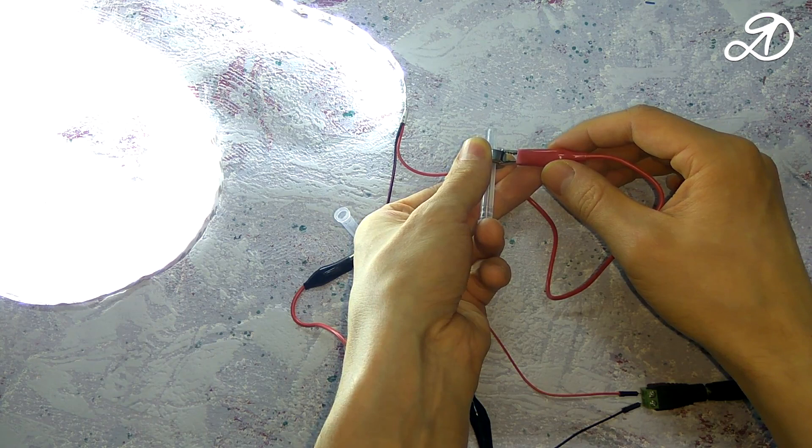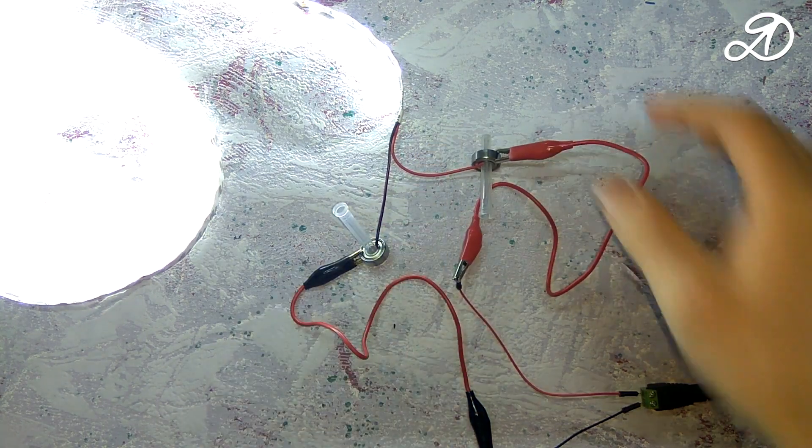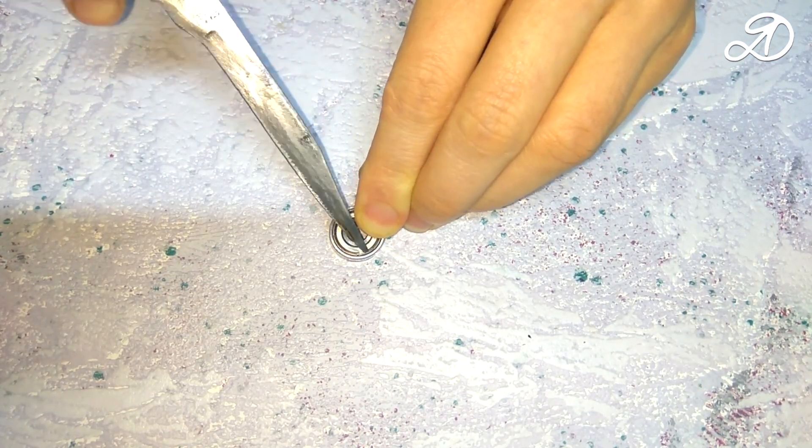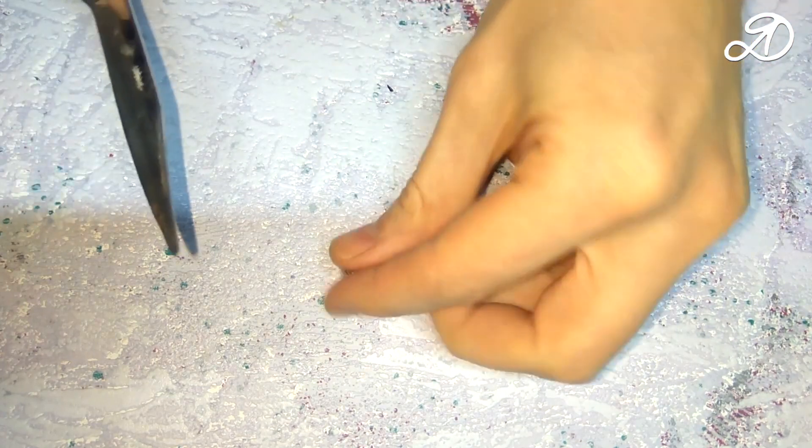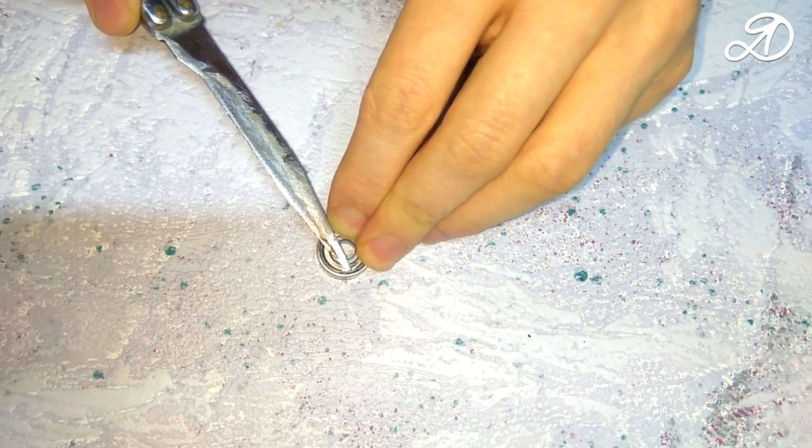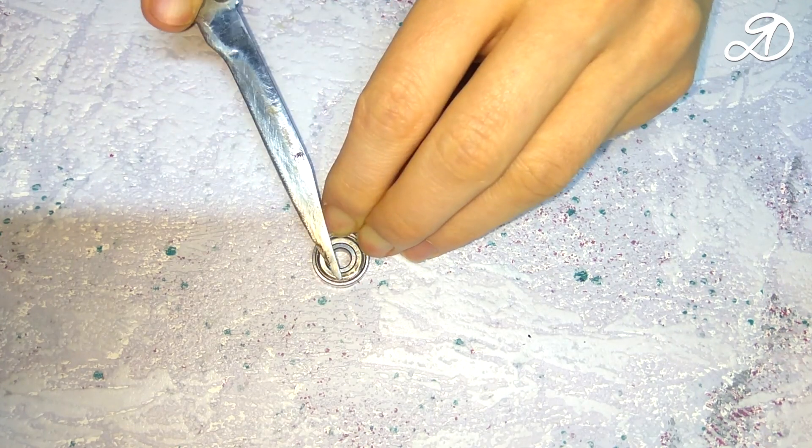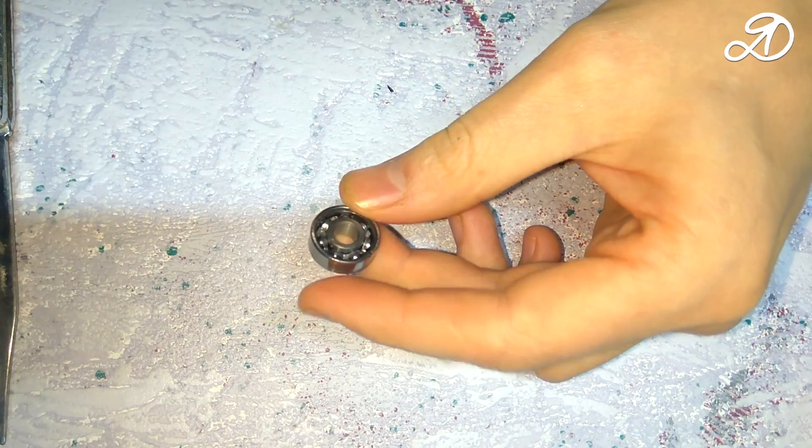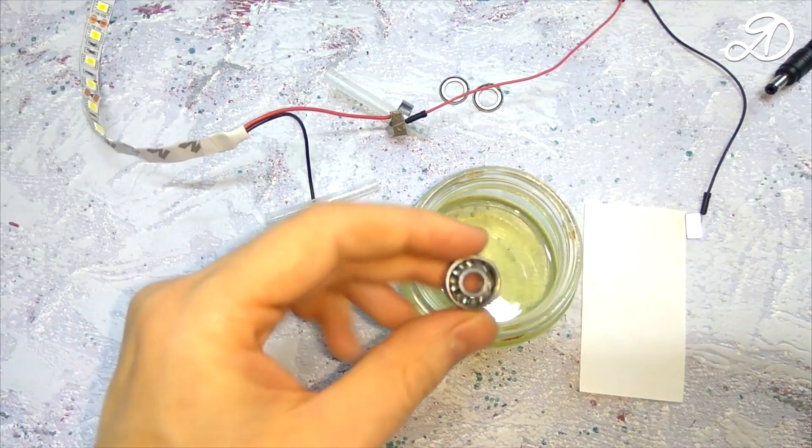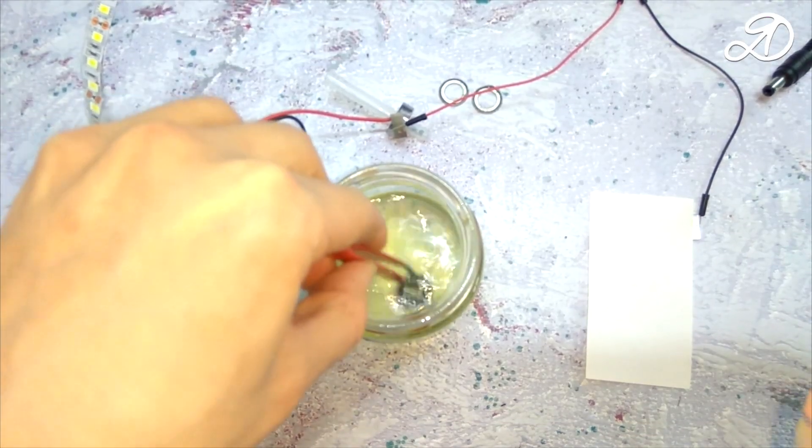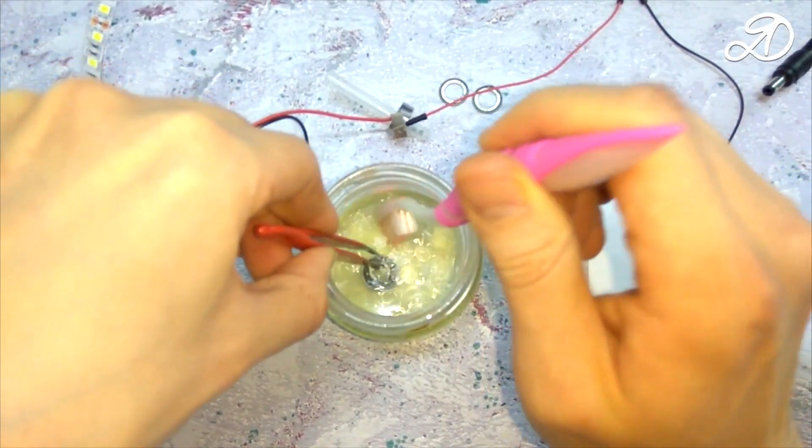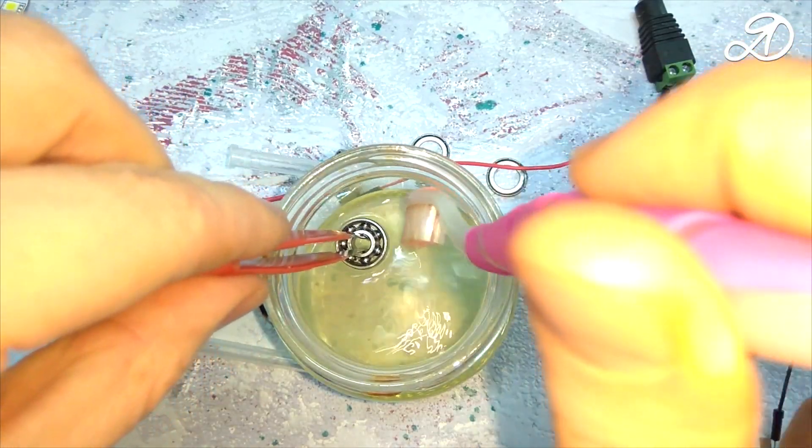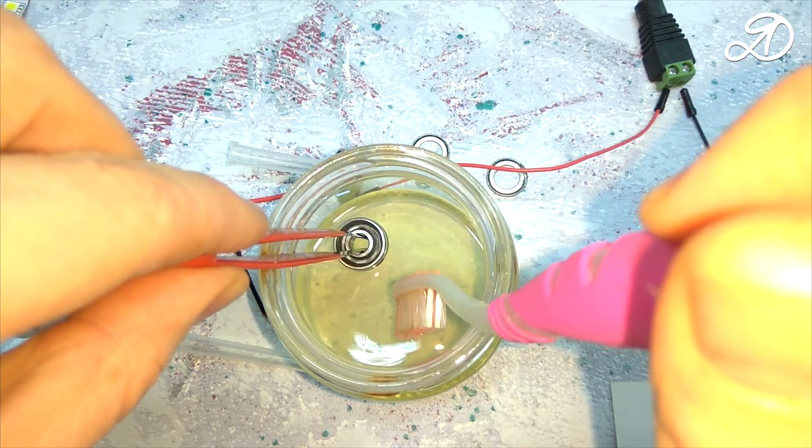By the way, I'll show you how to disassemble and clean the bearing grease. To remove the protective washer will require a thin and sharp object. Also the other side. To clean the bearing from grease I will use gasoline. The bearing began to rotate easily. Now you need to dry it.